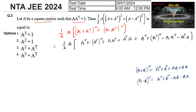It is given that A into A transpose is equal to I, which also implies that A transpose into A is also equal to I, because when A into B equals the identity matrix, A and B are multiplicative inverses of each other. So A transpose into A also gives I.